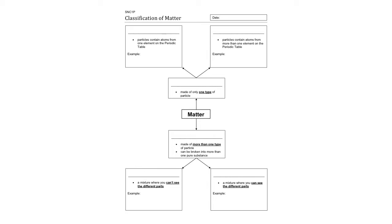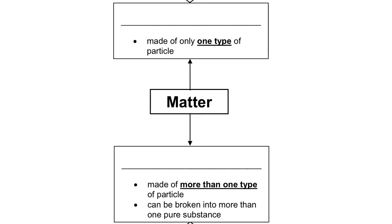I'm going to work through this mind map here. We're looking at matter, and it can be broken down into two general forms. Those general forms can be broken down even further into two types each. The first major distinction is that matter can be either a pure substance or a mixture.